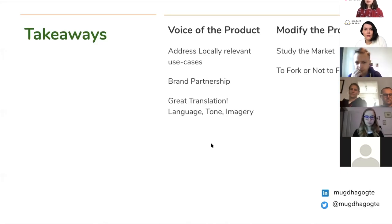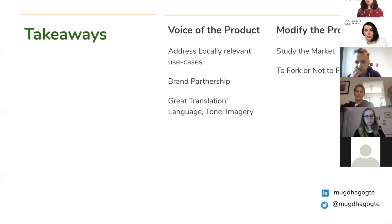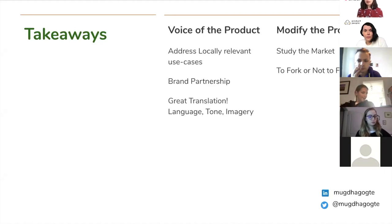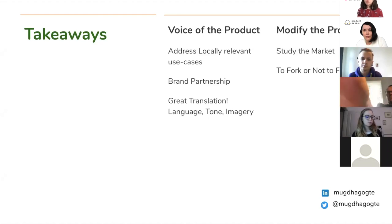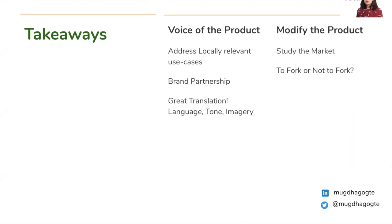Just a brief overview of takeaways. When focusing on international growth, focus on two aspects: voice of the product and actually modifying the product. For voice of the product, address locally relevant use cases, ensure brand partners reflect the perception you want to create in the new market, and focus on great translation to set the language and tone. When modifying the product, study the specific market thoroughly first, and then decide whether to fork the product or not.